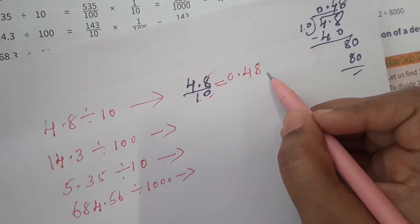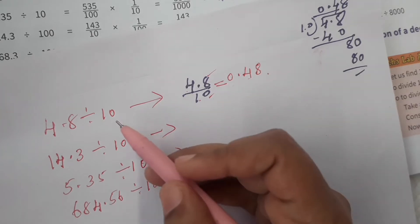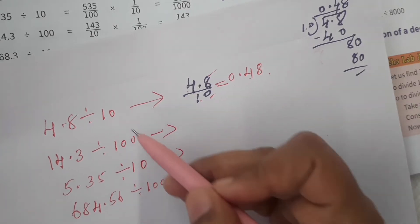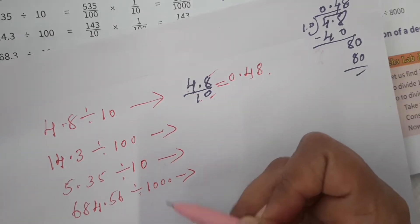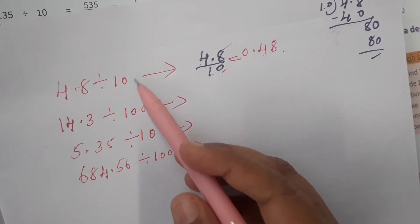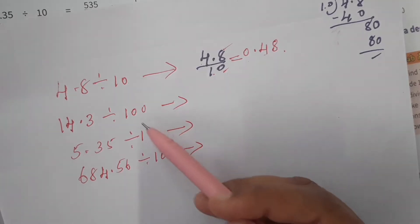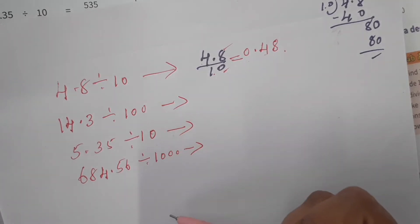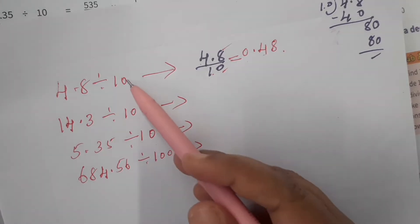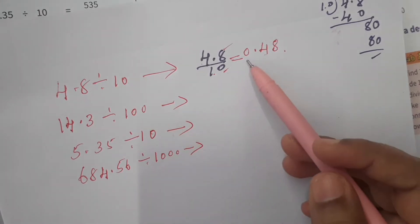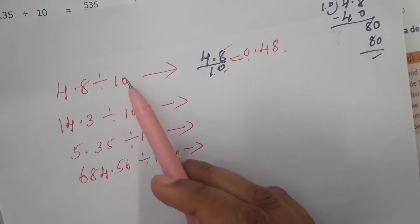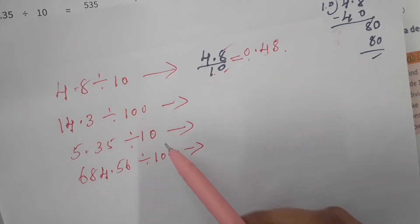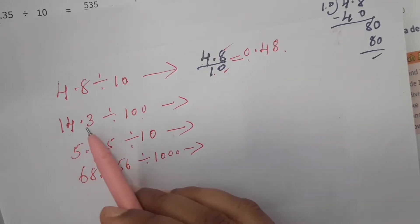We can divide any decimal number when the divisor is in the form of 10, 100, 1000 — place value forms. We can directly write the answer only when the divisor is 10, 100, 1000, or similar place value forms. For example, 14.3 divided by 100 is given.